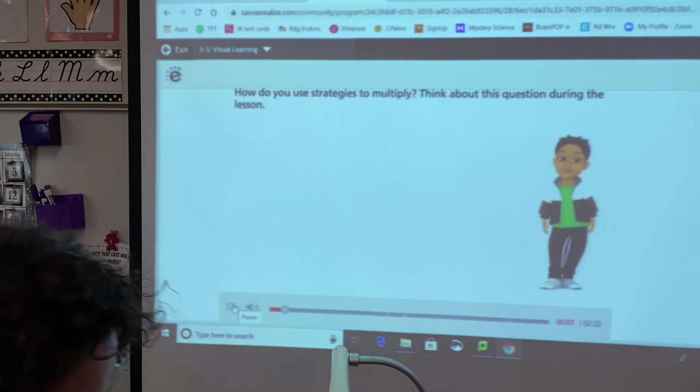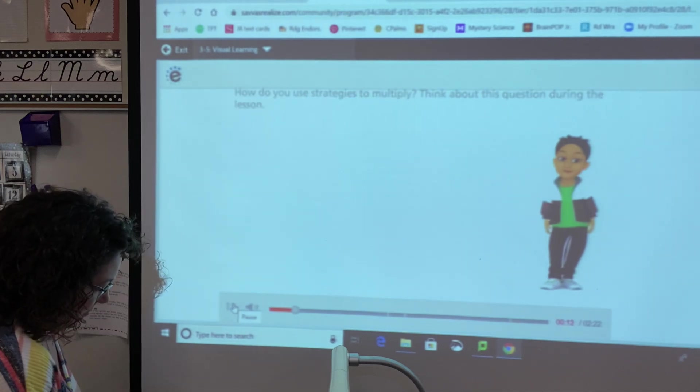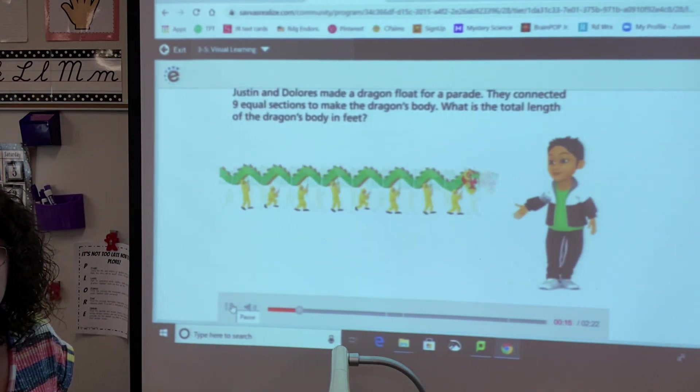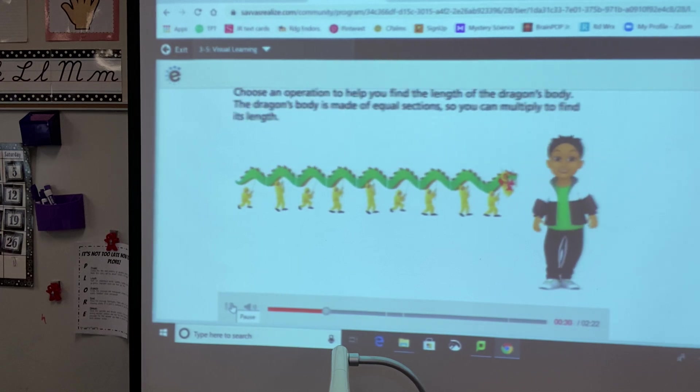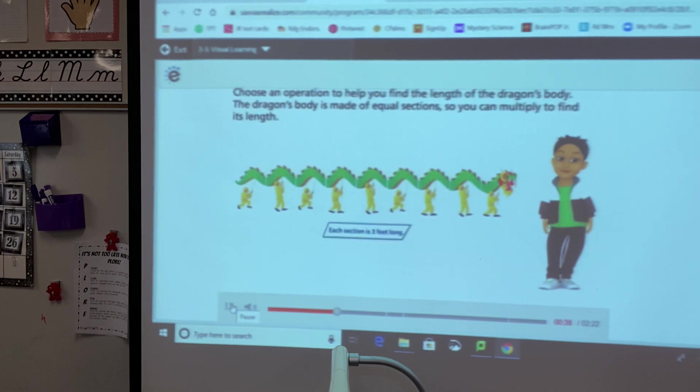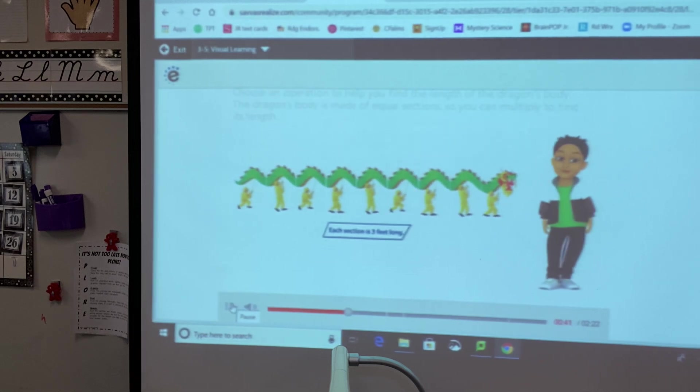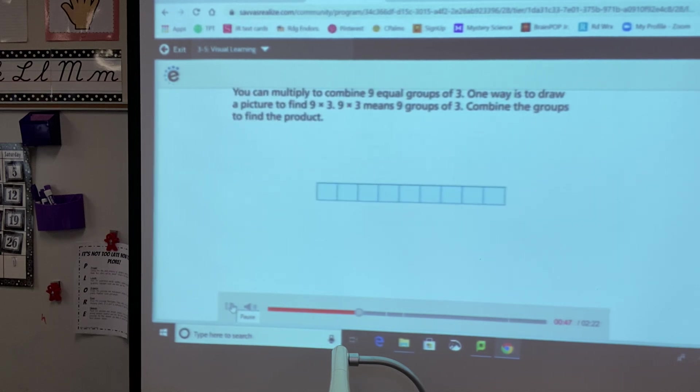How do you use strategies to multiply? Think about this question during the lesson. Justin and Dolores made a dragon float for a parade. They connected nine equal sections to make the dragon's body. What is the total length of the dragon's body in feet? The dragon's body is made of equal sections so you can multiply to find its length.